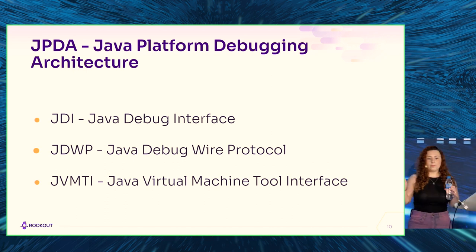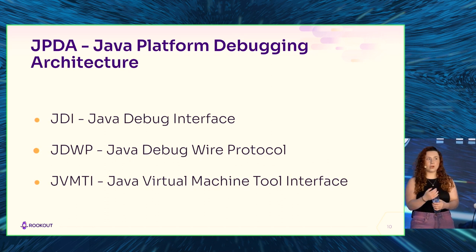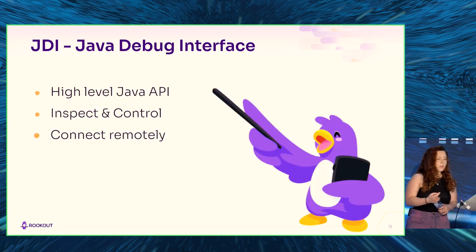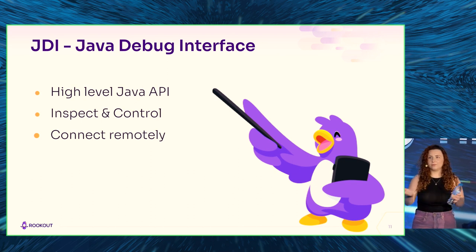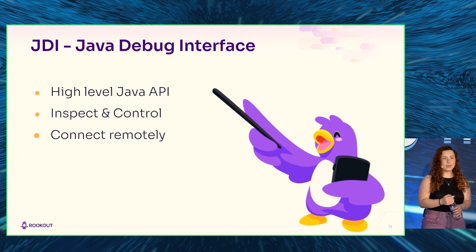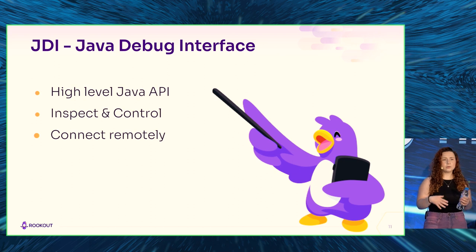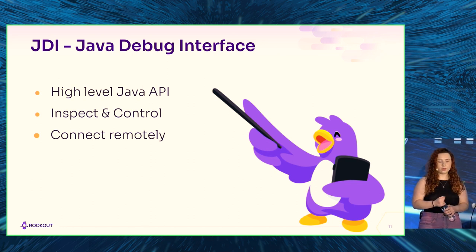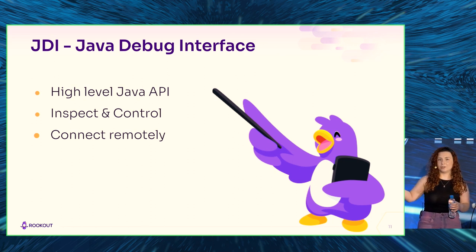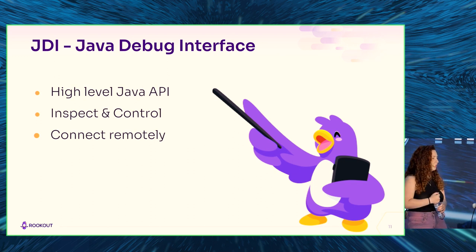Because JDI is the most high-level one, it's the one we wanted to start with. It's a high-level Java API, so you just need to code in Java. It allows you to inspect what's going on in your program - look at things, observe, and also control: stop at certain lines, step into functions, step out of functions, maybe even change a variable value. And it allows you to connect remotely, which is exactly what we saw JDB do.